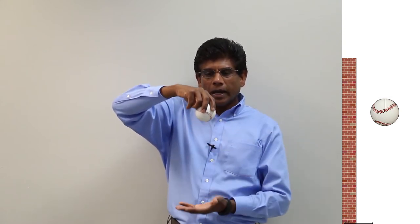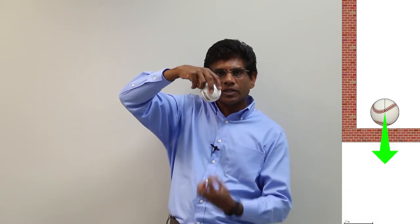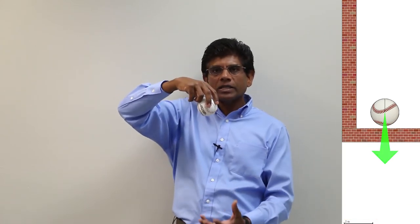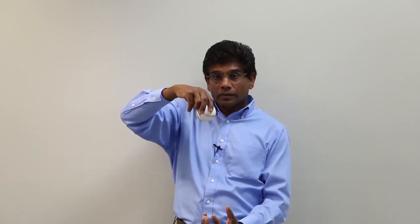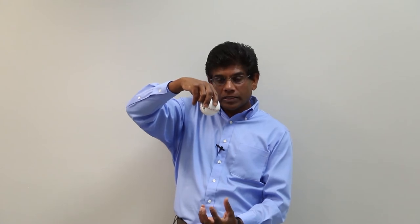Now let's consider a different scenario. I just dropped this ball. The ball is at rest, meaning the initial velocity is zero, and I just dropped it. The initial velocity changes from zero to a higher value, and the velocity vector is pointing down. In this case, the ball has only vertical velocity, which is negative. The vertical motion of this projectile is during free fall, so the acceleration is downward — acceleration due to gravity.